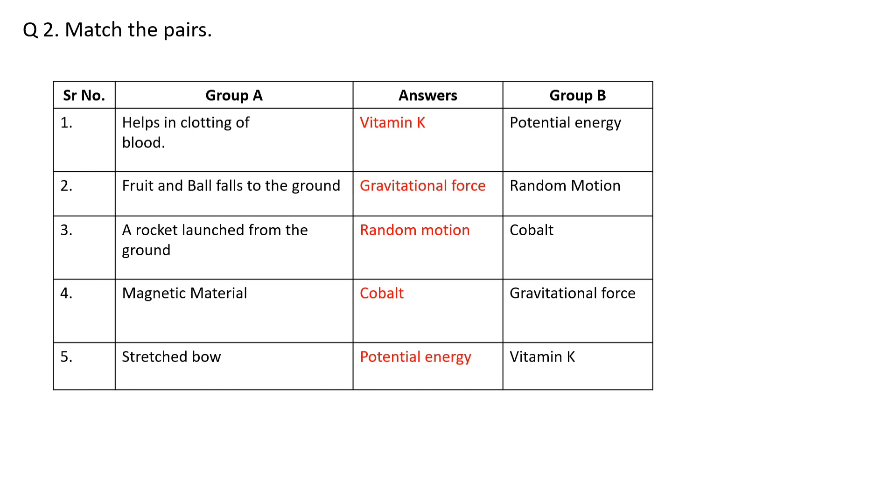Second: Fruit and ball falls to the ground, so here the example is gravitational force. A rocket launched from the ground, so here example is random motion. Magnetic material: cobalt. Magnetic materials example is cobalt.